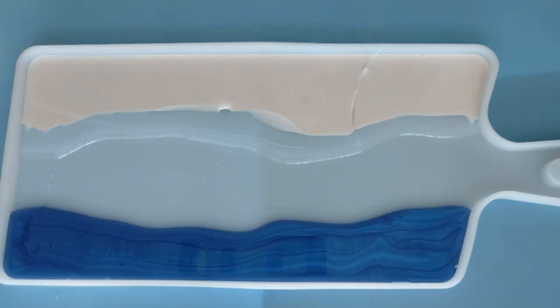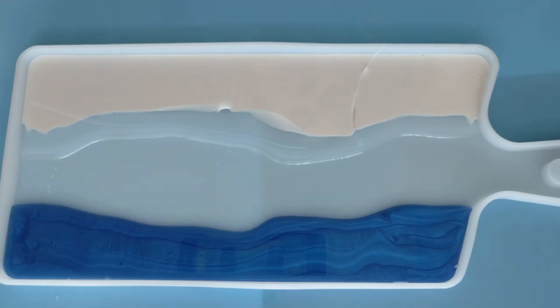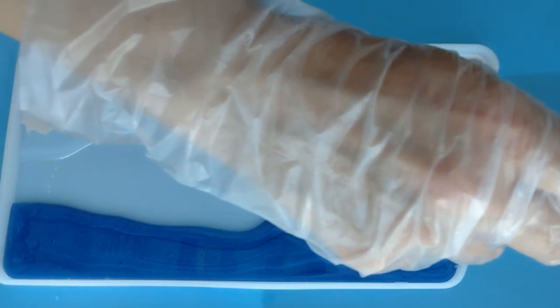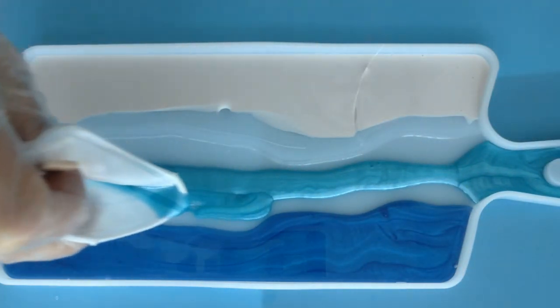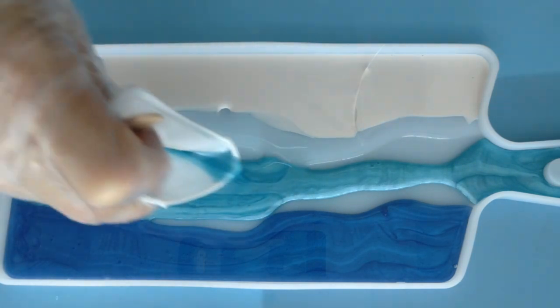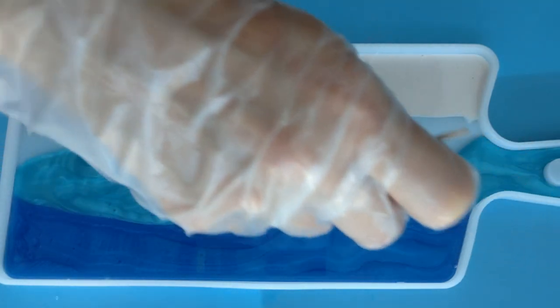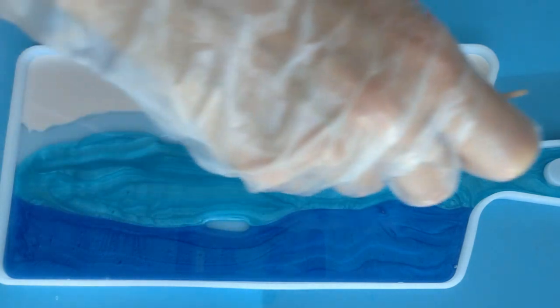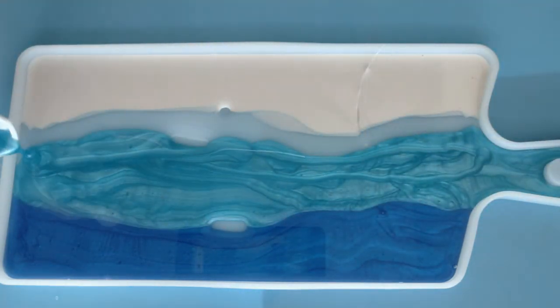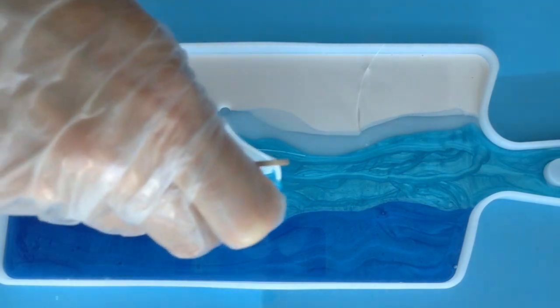And in the middle I will pour my turquoise blue mica. I ran out of gloves, so I had to use those ones that I had. But always protect your hands and always use a mask when you're doing resin.